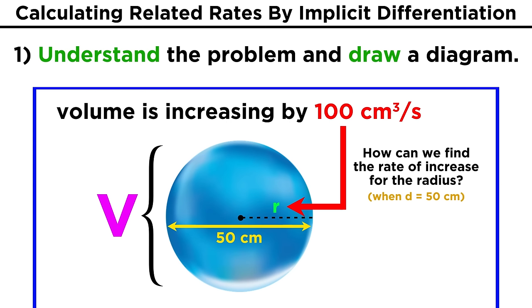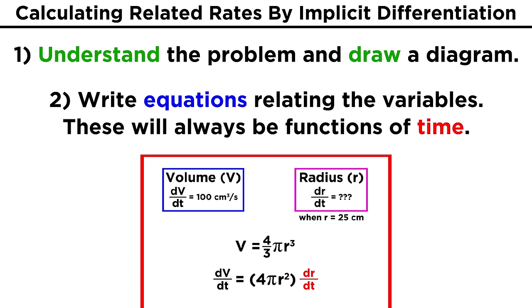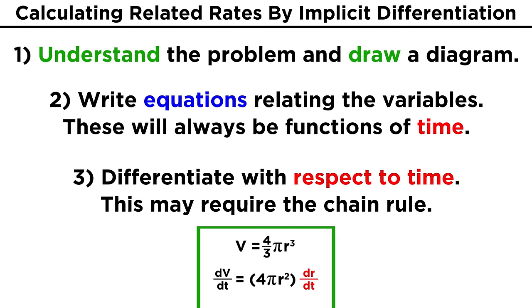So as we can see, related rates problems can be rather straightforward. The real challenge lies in understanding what the problem is asking, and being able to first draw a diagram. Then we must write equations from that diagram that relate the two variables in question. Because we are describing rates, these will always be functions of time, and we will be taking derivatives of functions with respect to time. This may require the chain rule,